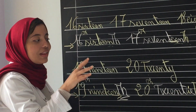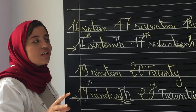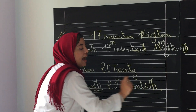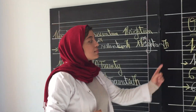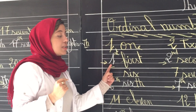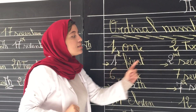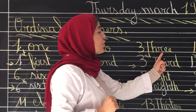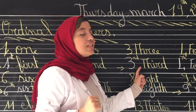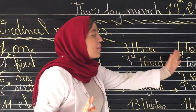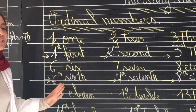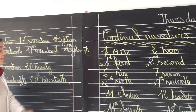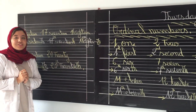So, most of all these numbers, their ordinal number ends with 'TH', except 1 which is 1st, 2 which is 2nd, and 3 which is 3rd. But most of all these numbers, their ordinal number ends with 'TH'.